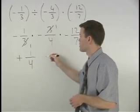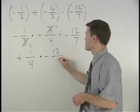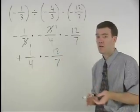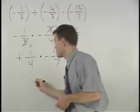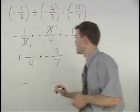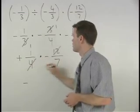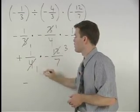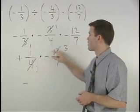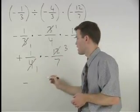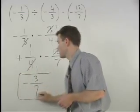Bringing down our times negative twelve-sevenths, we now have a positive times a negative, which is a negative, and our twelve and four cross cancel to three and one. So we have negative three over seven, which is our final answer.